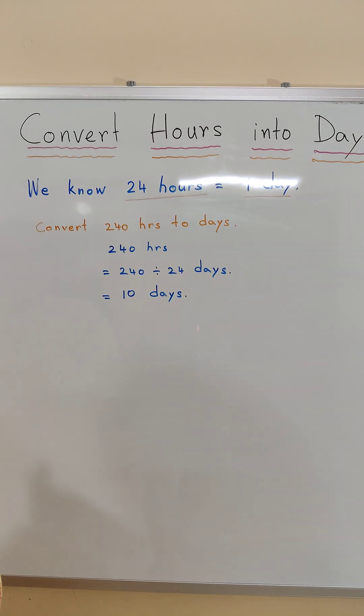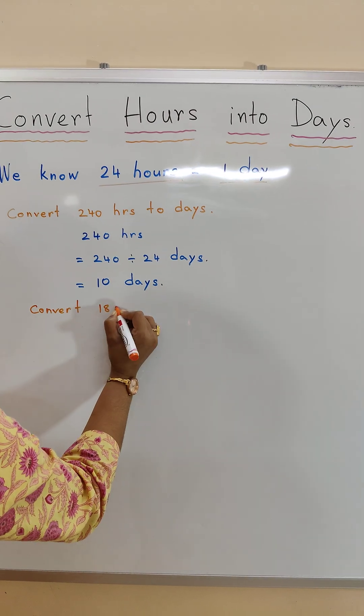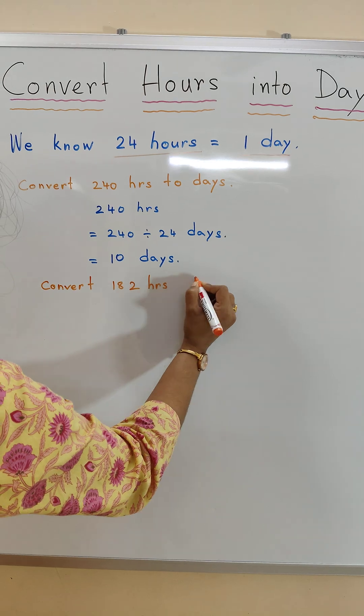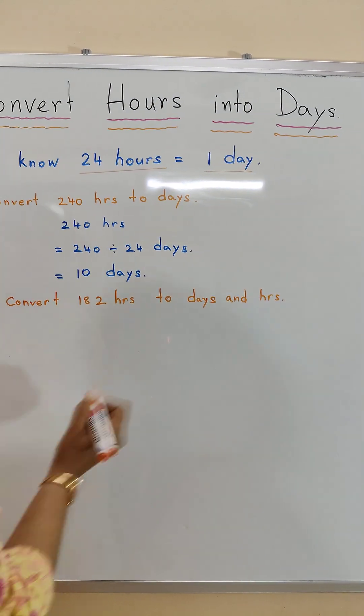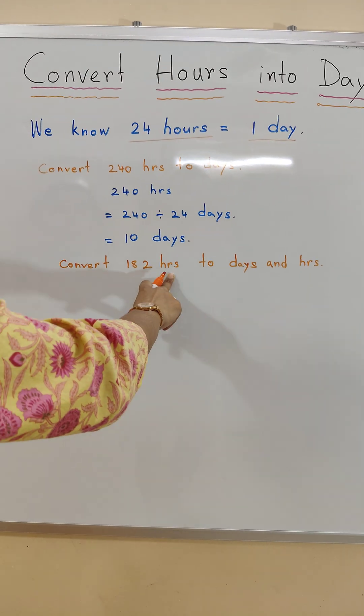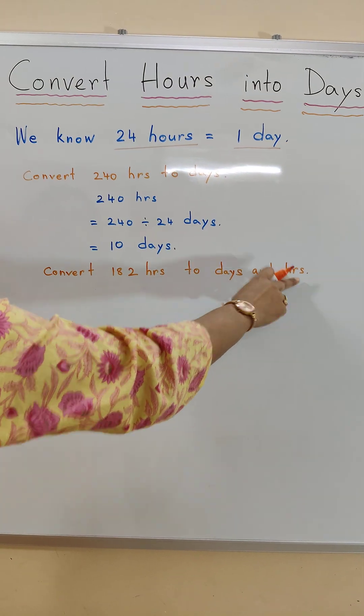Let's do another example. Convert 182 hours to days and hours. So here we will learn how to convert hours to days and hours.